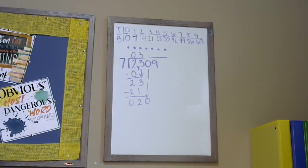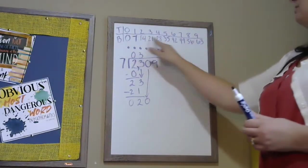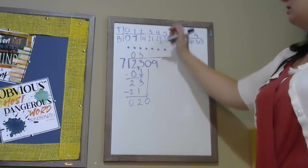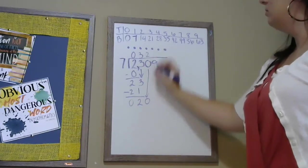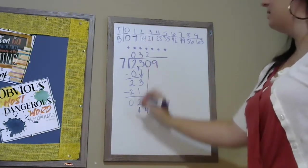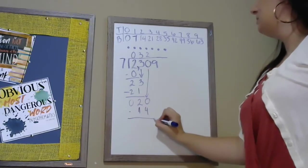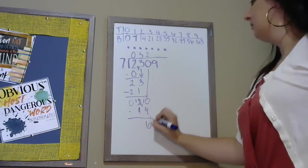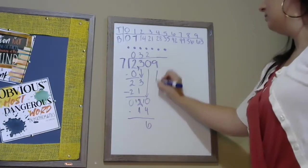Now I have the number 20. Which of these numbers is the largest number I can subtract from 20? That's 14. Tops, bottoms, subtract, bring down.